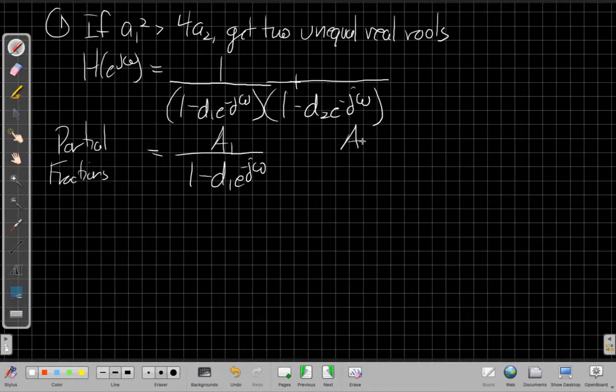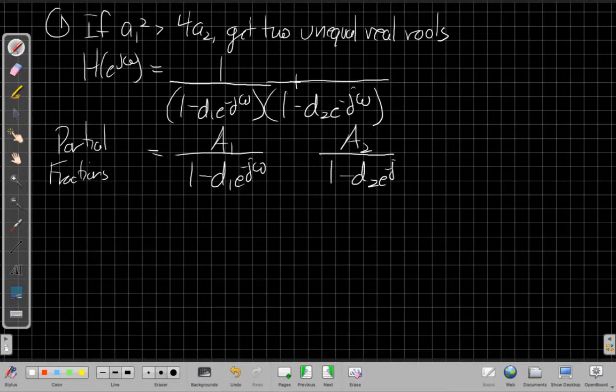But I can say that when I was done with that, I would end up my second order system would be a sum of two terms with some coefficients A1 and A2 in the numerator. And so when I do the inverse Fourier transform,